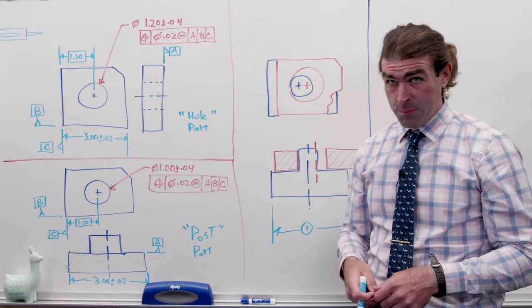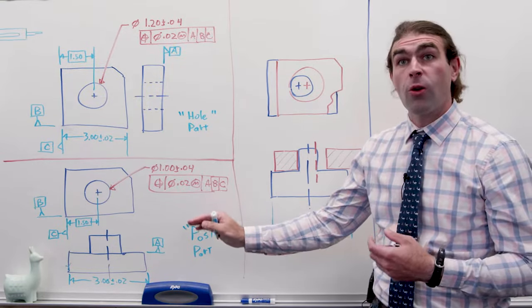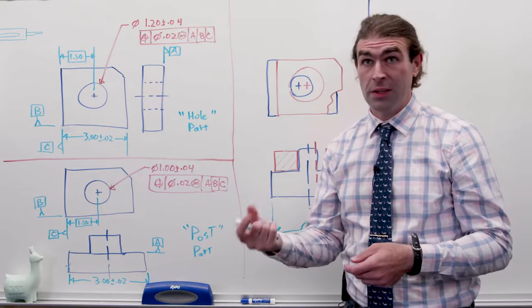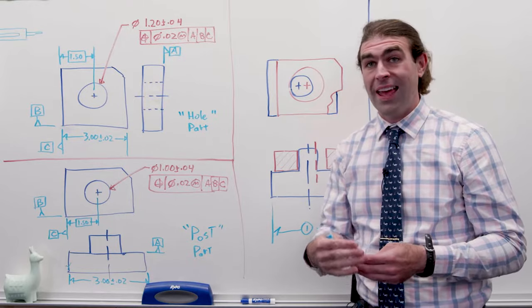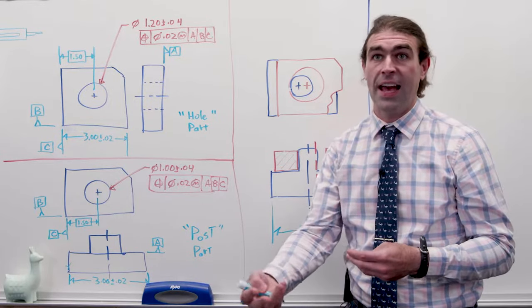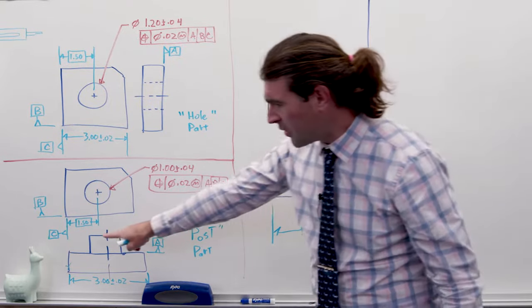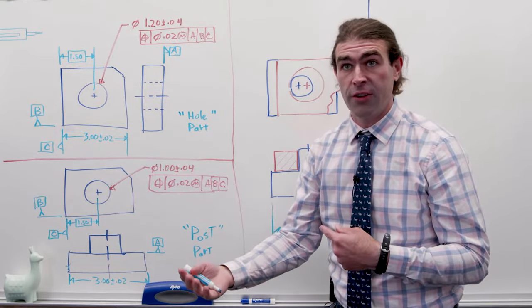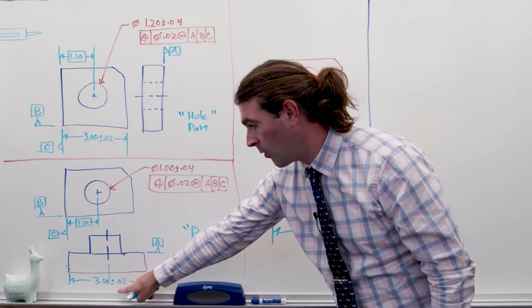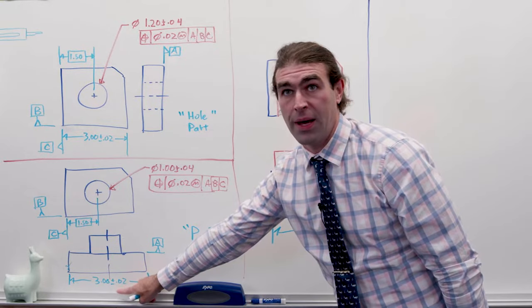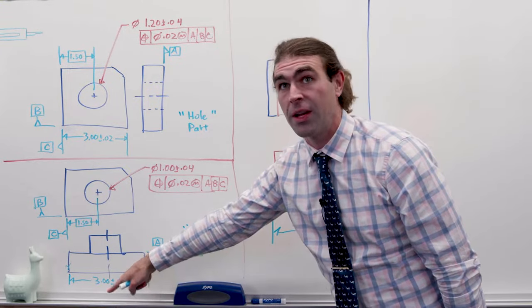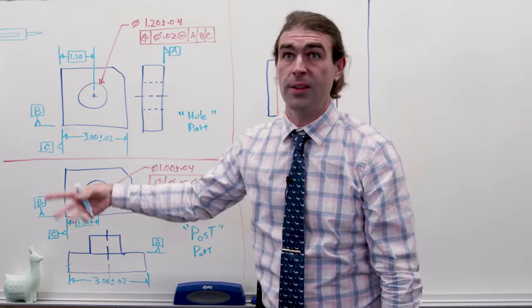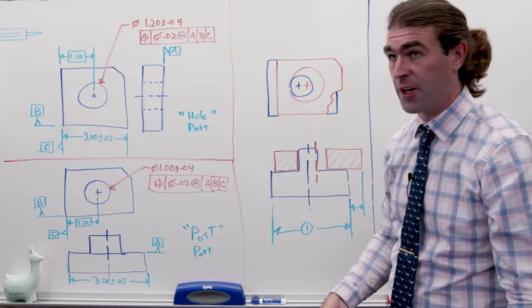I want to mention quickly — the datums aren't qualified here; this is kind of an incomplete drawing. But even if we did qualify them, they wouldn't count toward the stack-up. Say I had a perpendicularity on datum C — that wouldn't matter for the stack-up because the overall outer boundary is controlled by this plus or minus dimension. A perpendicularity would just refine that. That's why I left them out; they don't really matter here.